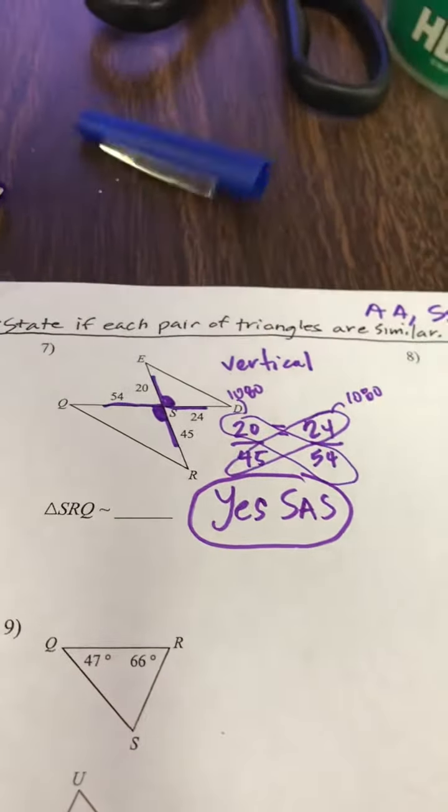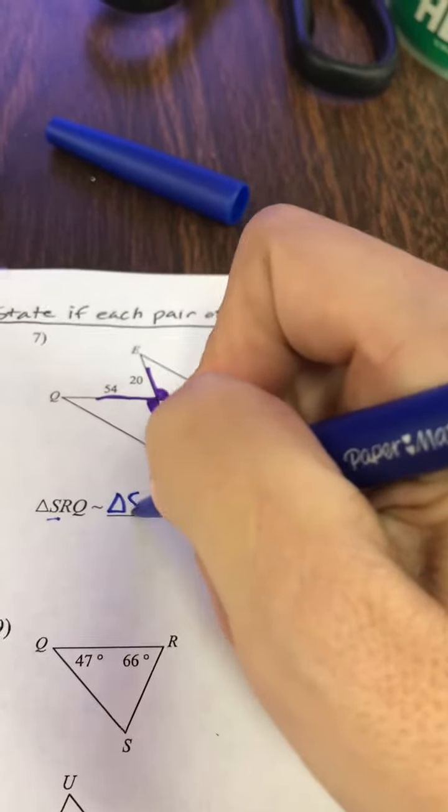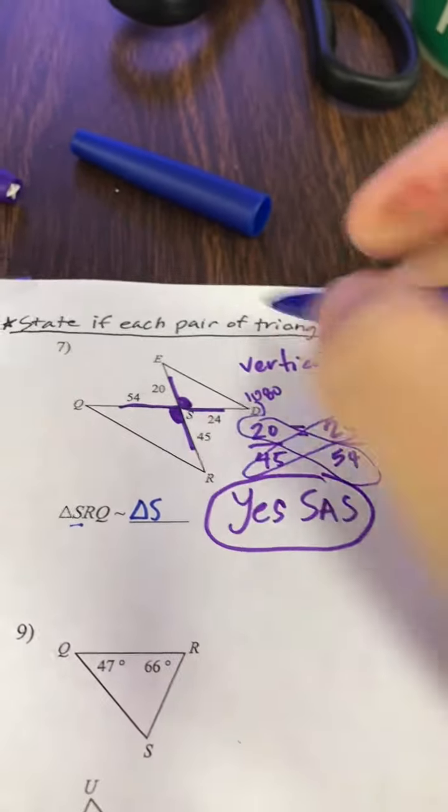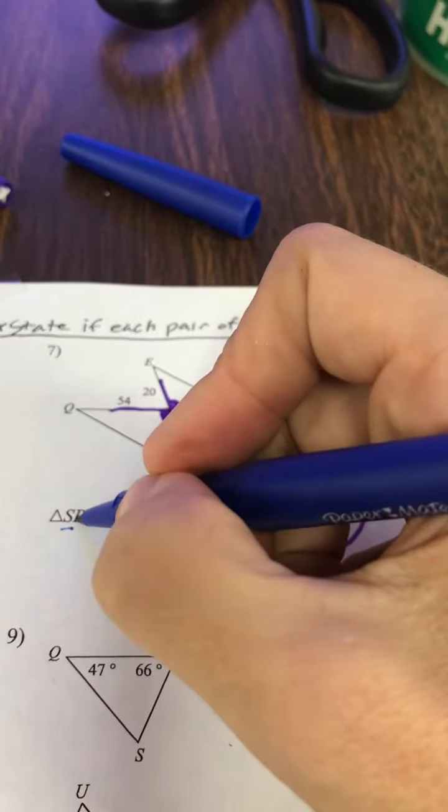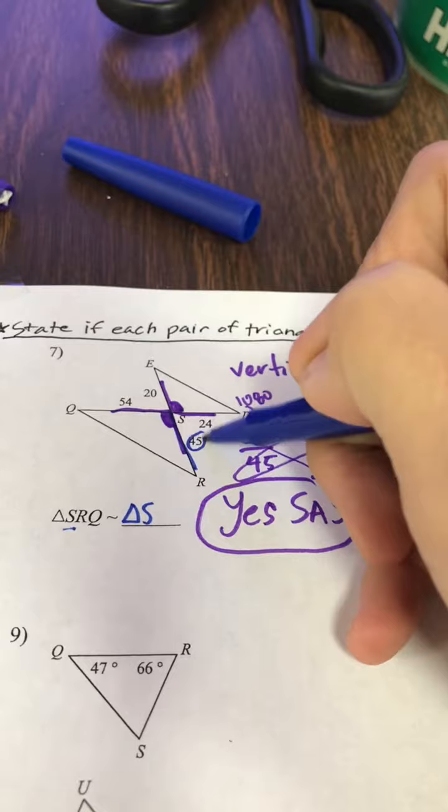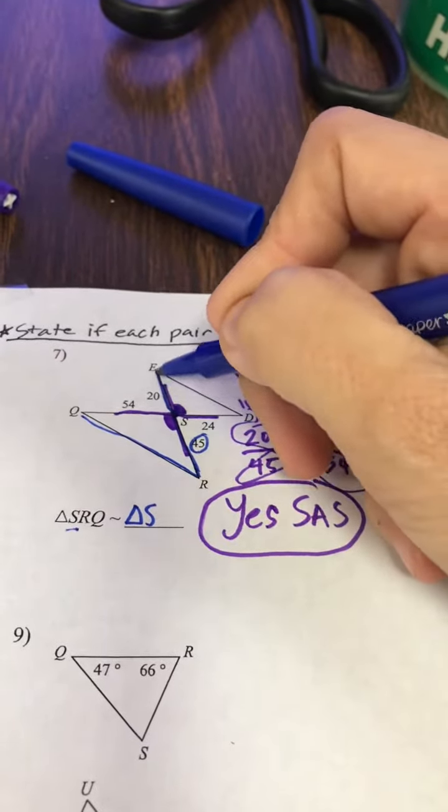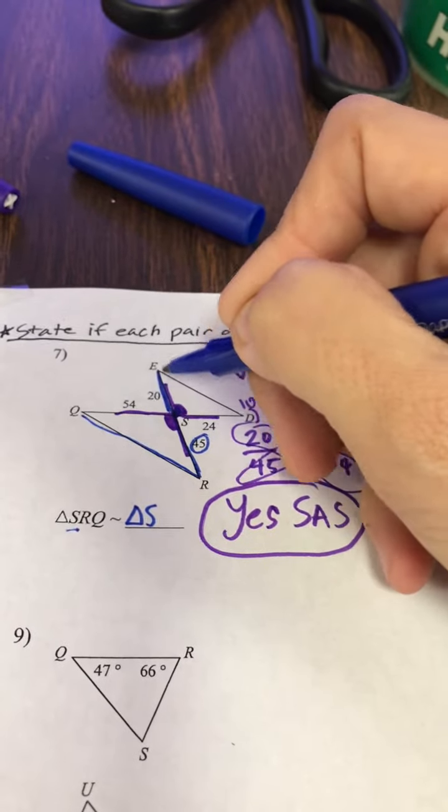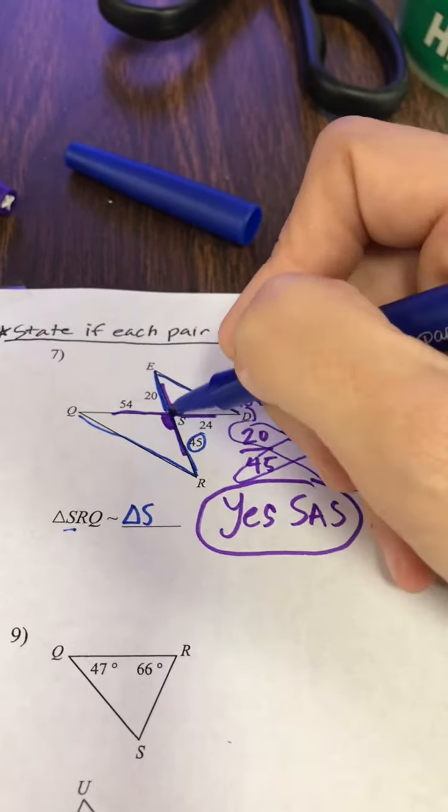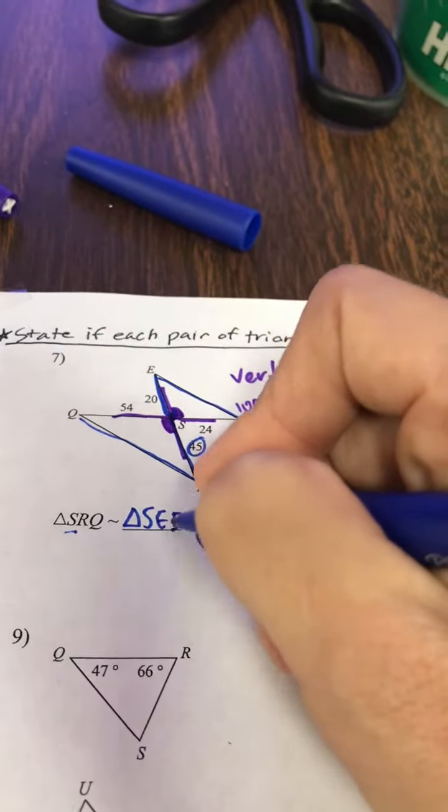Yes, they are similar. Now let's name it. So let's see how they named it S. So we know we're going to have to start with S because we know that's the congruent angle. And then they go R and Q. So they went S across the small side and then the unknown. So we've got to do the same thing here. S across the small side, which is 20, and then the unknown side. So I have to name this S-E-D.